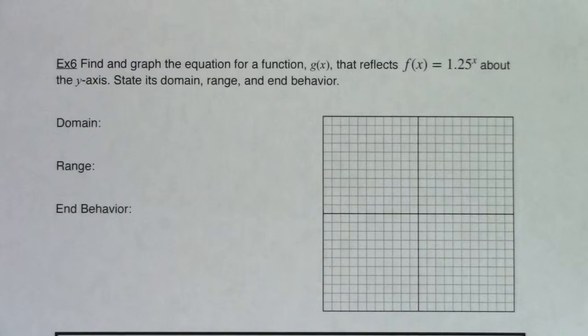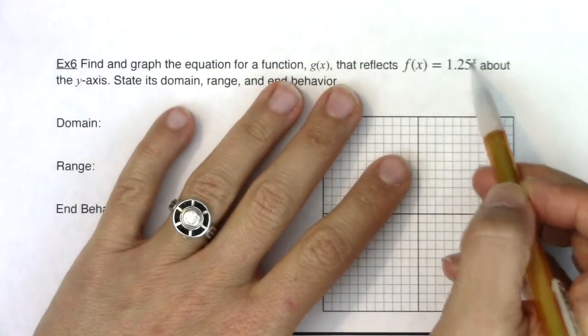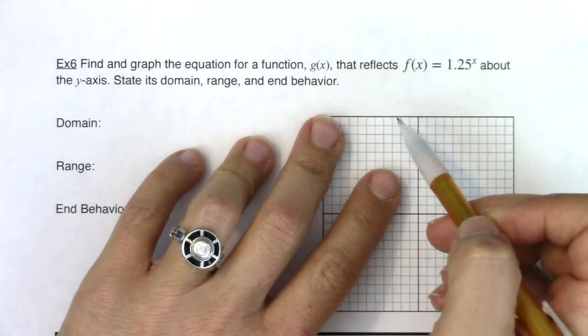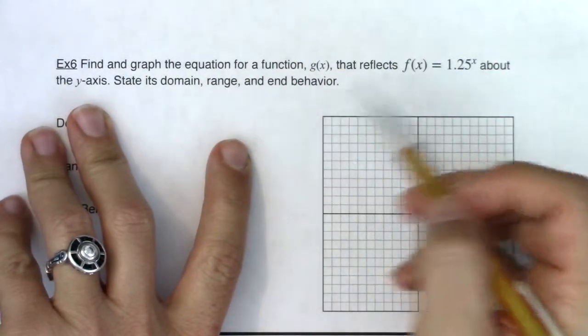Hey, Math 31. Welcome to example 6. We're going to find and graph the equation for a function g(x) that reflects f(x) = 1.25^x about the y-axis, and then we're going to state its domain, range, and end behavior.